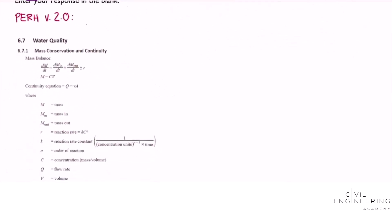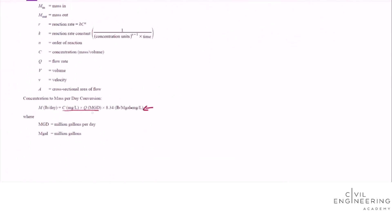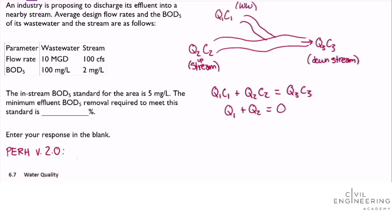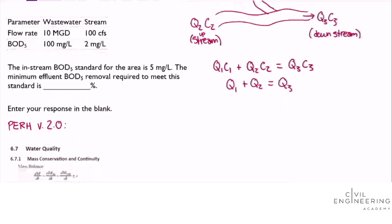We'll just use this equation to set in equal to out so that will be Q1C1 plus Q2C2 equals Q3C3 and we also know that Q1 plus Q2 will equal Q3. So these will be our governing equations for this problem.